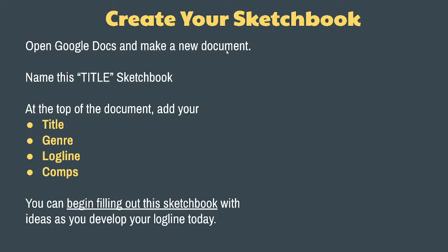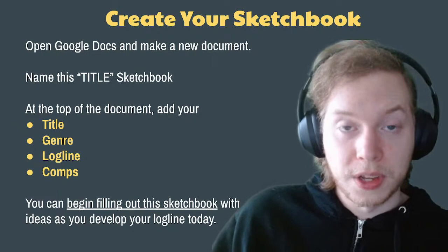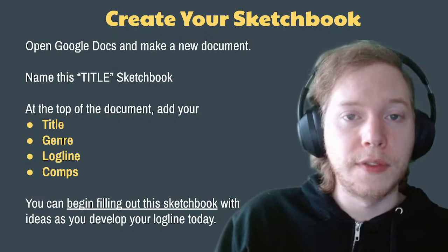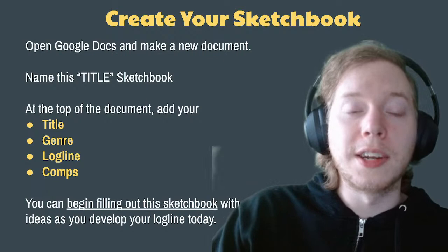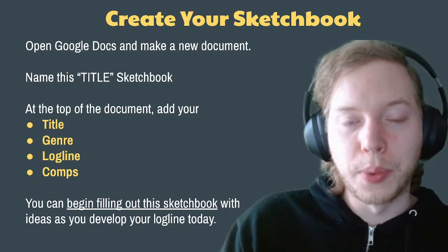The sketchbook should be one single document — we don't want a bunch of different documents everywhere. Let's make one now: go to Google Docs and make a new document. Call it 'Title of the Movie — Sketchbook.' If you don't have a title, call it something like 'Untitled Vampire Comedy Sketchbook.' At the top, include these basic categories to fill in as soon as you can: title, genre, log line, and comps. Comps are comparable titles that help assess the goals for your project in terms of tone and content — like 'this movie meets that movie.'